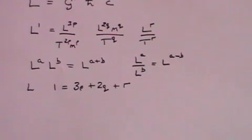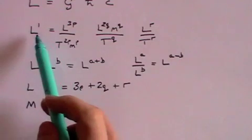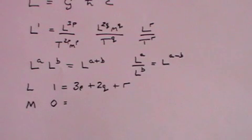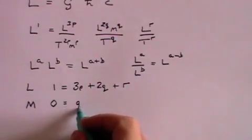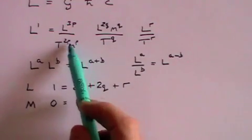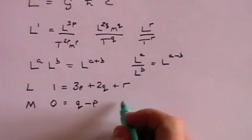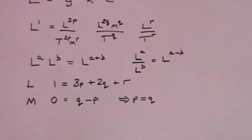That's in terms of l. Now what about m? Well we've got nothing on this side here, so that's 0 in terms of powers. m to the power 0 is 1. On this side we've got q and then the p at the bottom becomes minus p, and that of course tells us that p equals q, whatever they turn out to be.